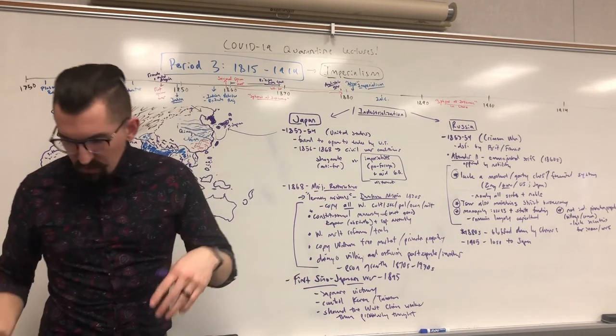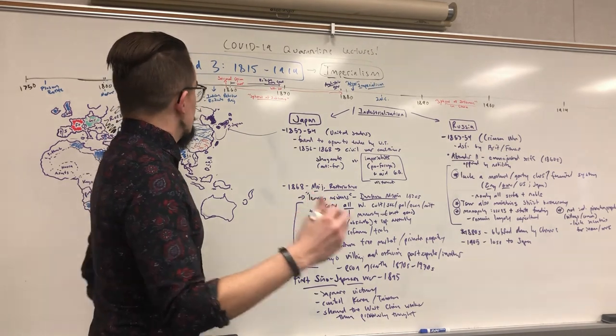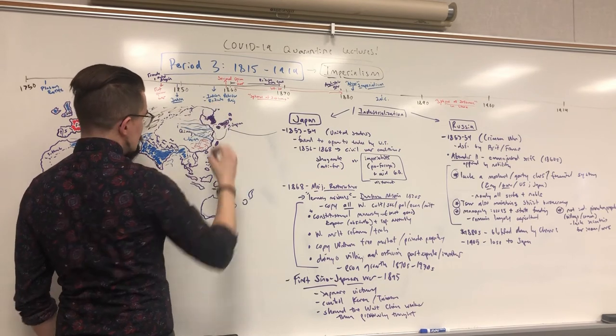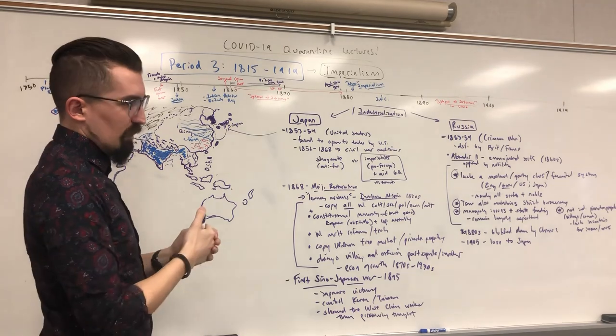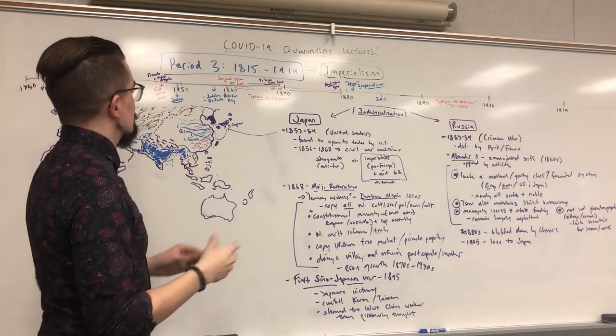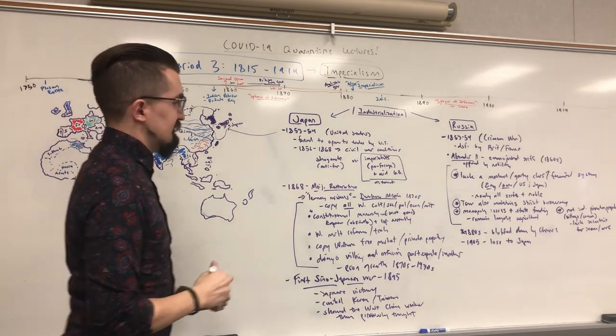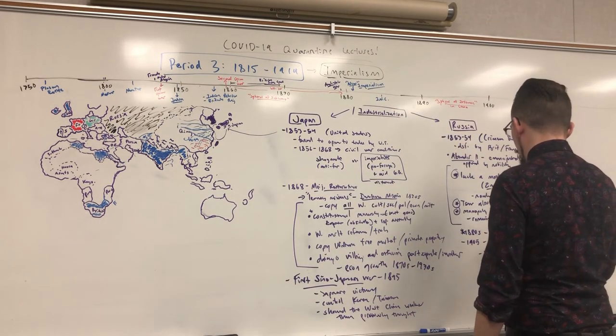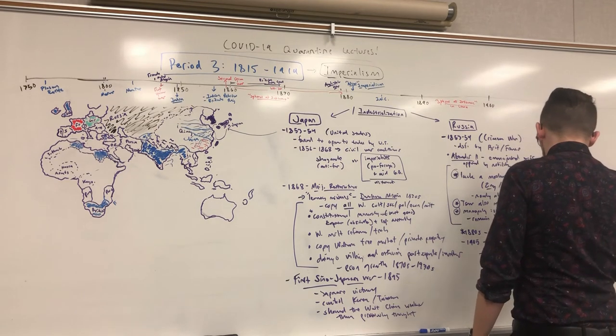So where that really is shown is the conflict over control of the railroads in what is Manchuria. Russia and Japan both wanted access and control of this territory, particularly this railroad, so much so that they actually argue over and fight over it and in 1905 fight a conflict referred to as the Russo-Japanese War.